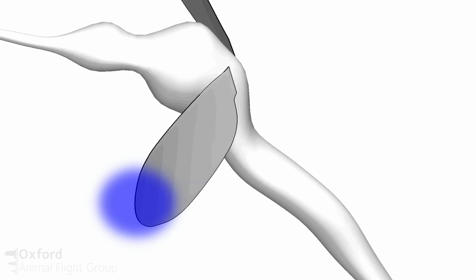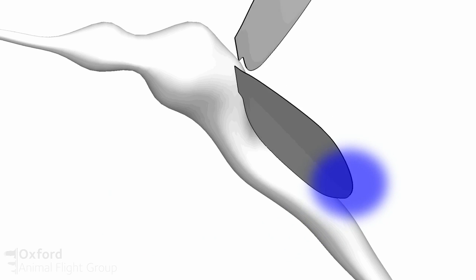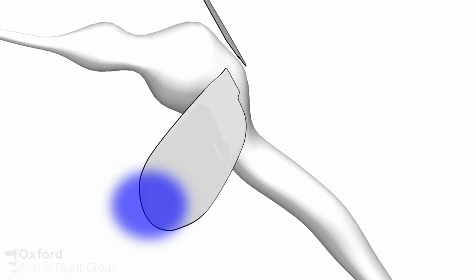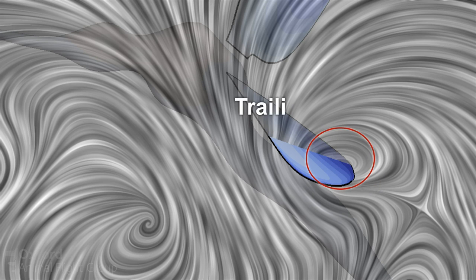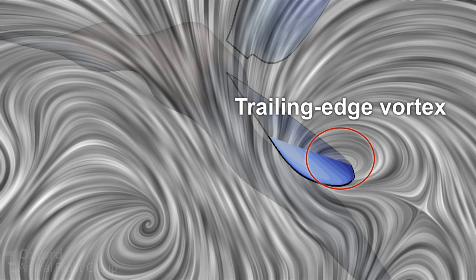Instead, they use two distinctive aerodynamic mechanisms which are dependent on the rotational parts of the wing at the end of each half stroke. And these are called rotational drag and the trailing edge vortex. The trailing edge vortex is particularly interesting because it's never been seen before in insects or any other animal for that matter.